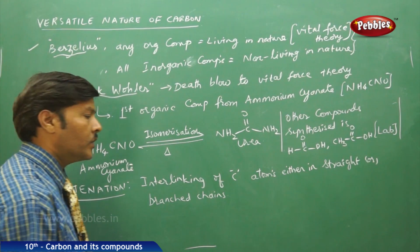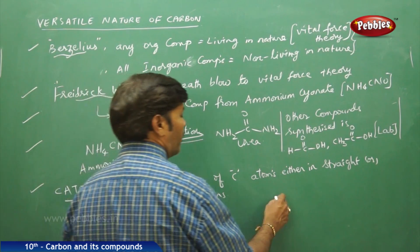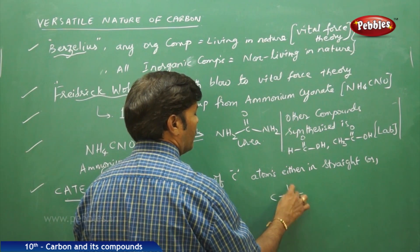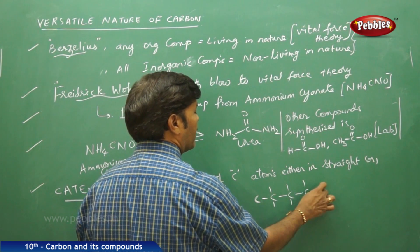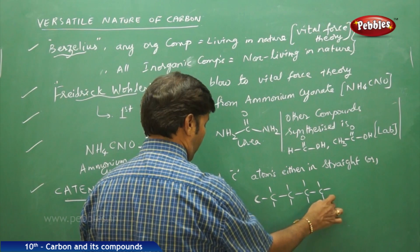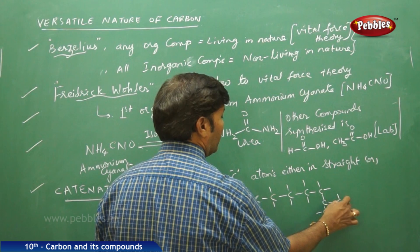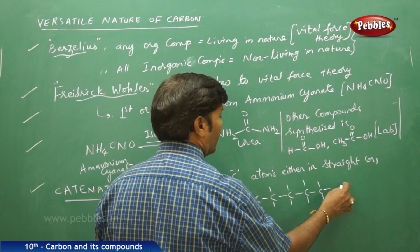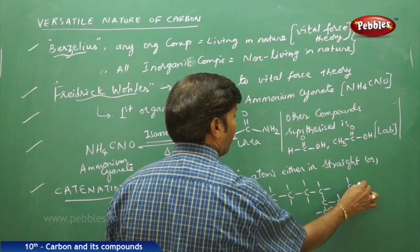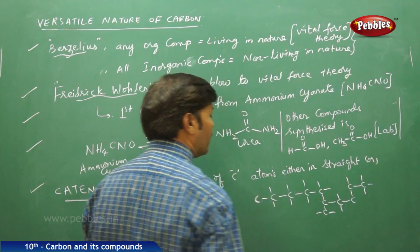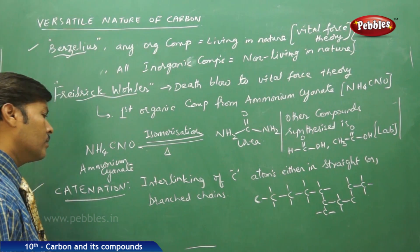Carbon has the tetravalence property that enables catenation. It can interlink itself in straight chains or in branched chains, and there is no specific condition — carbon can interlink in either way. This interlinking of carbon atoms in straight or branched chains is called catenation, and there is no limit to the catenation power of carbon.